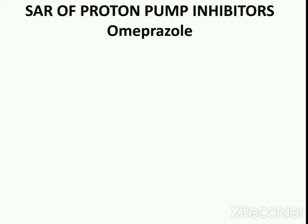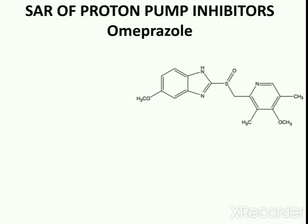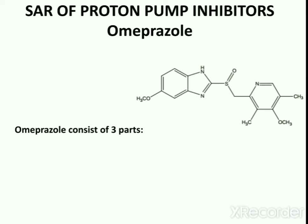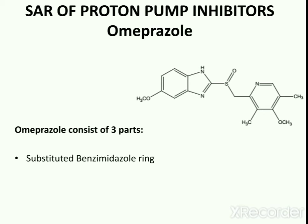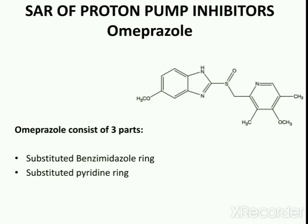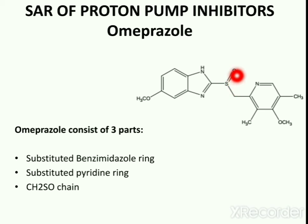Now I will discuss the structure-activity relationship of proton pump inhibitors. Omeprazole is a proton pump inhibitor whose structure consists of three parts: a substituted benzimidazole ring, a substituted pyridine ring, and a CH2SO chain linking them.